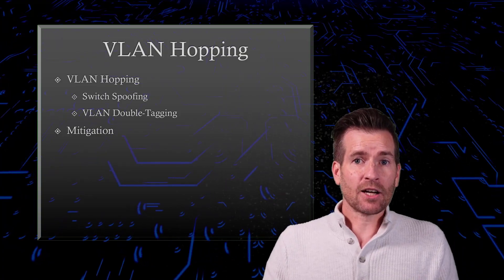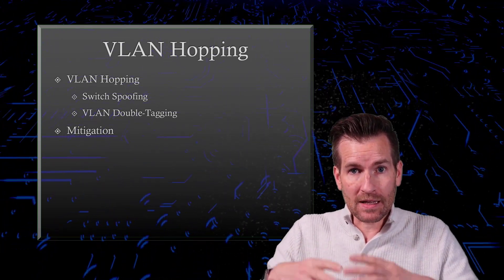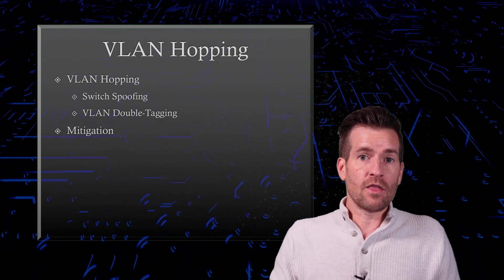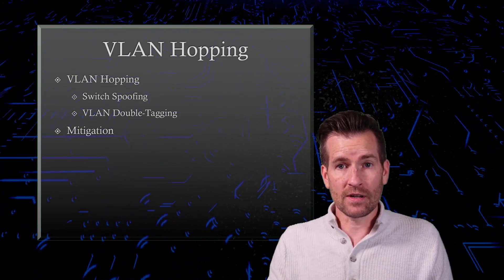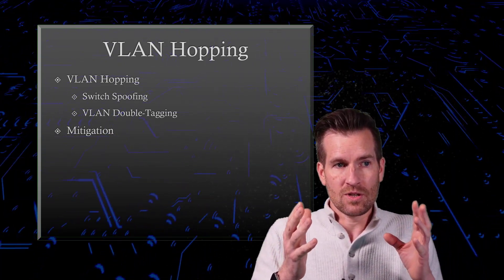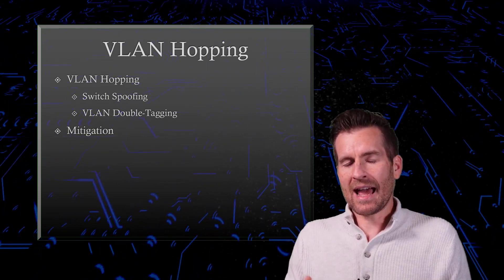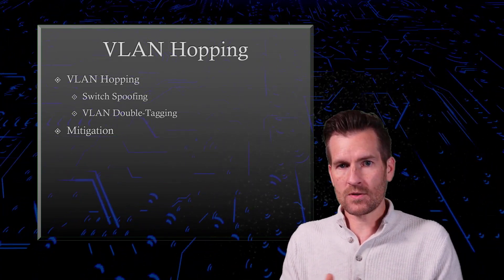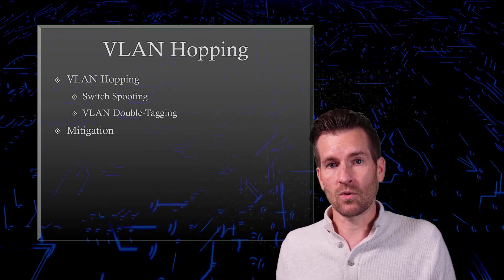So that's how an attacker will do VLAN hopping — whether using DTP to spoof or mimic a switch to create a trunk line, or using the native VLAN to jump to another VLAN. We also talked about mitigations: don't use the native VLAN, and if you do, don't make it the default. Turn off DTP by explicitly setting access ports as access ports and trunk ports as trunk ports, so there's no dynamic trunking protocol running on your switch.